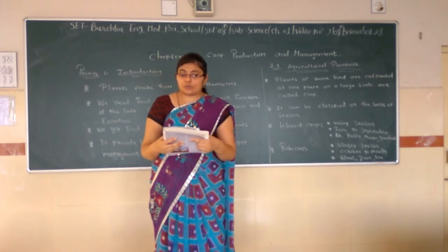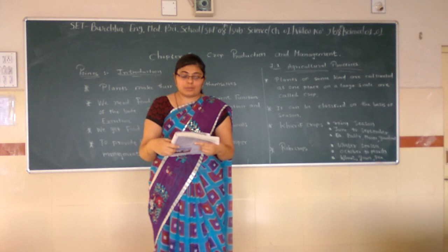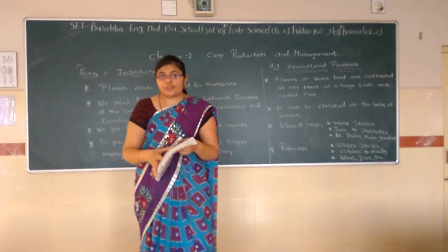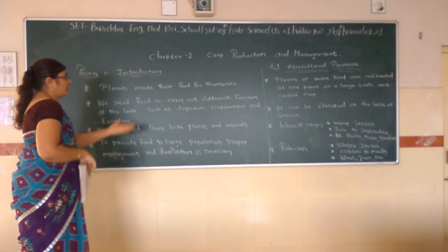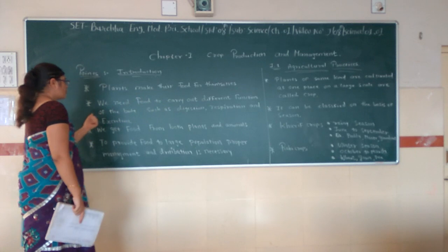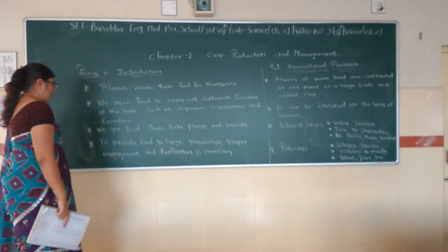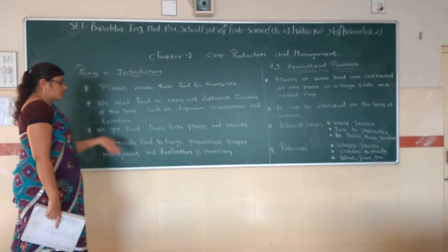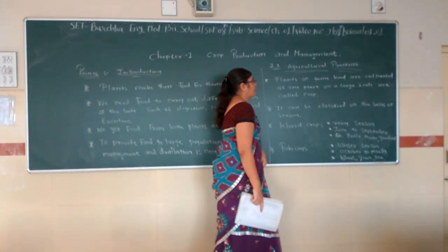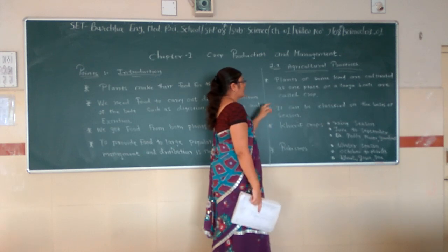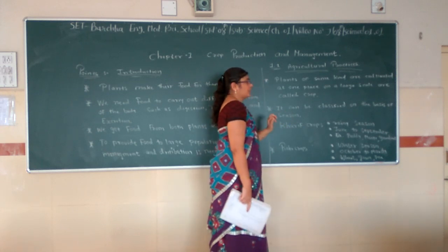Besides these, pulses and vegetables are grown during summer at many places when proper water and rainfall is available. So in summary: plants make their own food; we need food to carry out different body functions such as digestion and respiration; we get food from both plants and animals; to provide food to a large population, crop production and distribution is essential; and crops are classified by season — Kharif for monsoon and Rabi for winter.